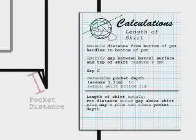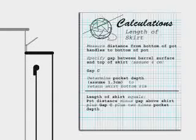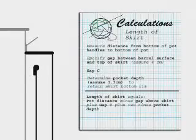Determine the pocket distance to retain the skirt bottom rim. The length of the skirt equals pot distance minus gap above skirt plus gap C plus 2 times pocket distance.